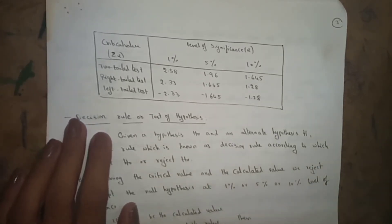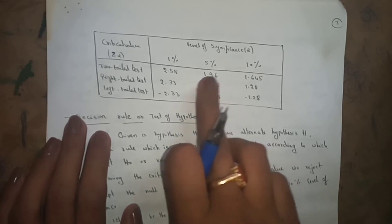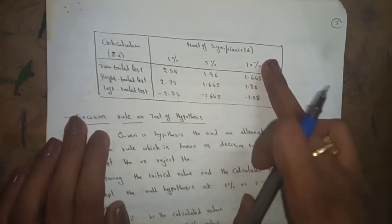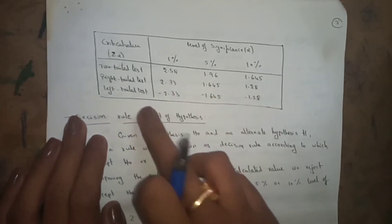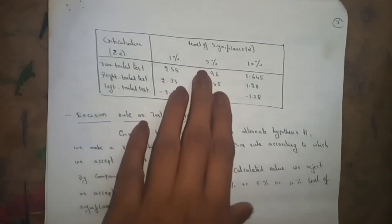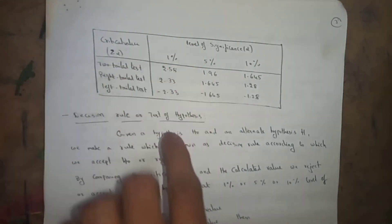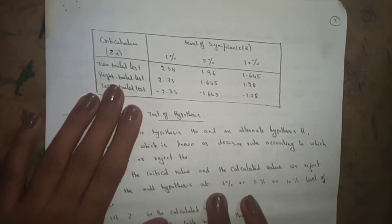The next topic is critical values Z_alpha. From the standard table, the critical values are: for a two-tailed test — 1% gives Z=2.576, 5% gives Z=1.96, 10% gives Z=1.645. For a right-tailed test — 1% gives Z=2.326, 5% gives Z=1.645, 10% gives Z=1.282. For a left-tailed test, the corresponding negative values apply. These values must be memorized or taken from the table.